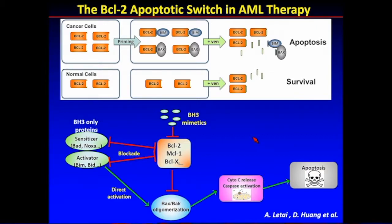Because BCL2 also binds to other activators or BAK and BAX, they will essentially be free from BCL2 and can go ahead and execute cell death. That was the theory behind that. One would ask: why target BCL2? What's the difference between malignant cells and normal cells? It's not very well established, but there is a theory of priming, mainly developed by Tony Letai and his group at Dana-Farber. It's believed that cancer cells have high levels of BCL2 because they have a lot of stress from oncogenes or other insults, and therefore overexpress BCL2 family members — not just BCL2, and I'll mention that later.